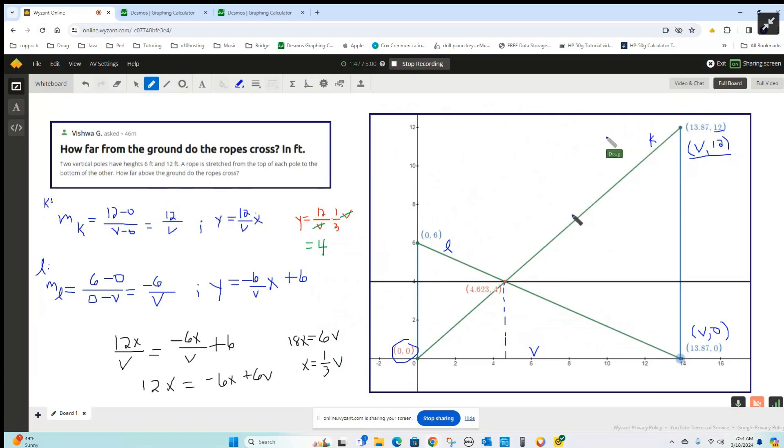So the equation of the line K is Y equals the slope, 12 over V times X plus the y-intercept, which is 0. So there's the equation of line K.